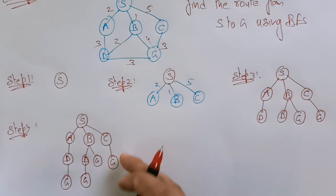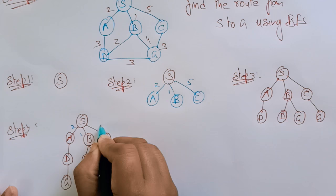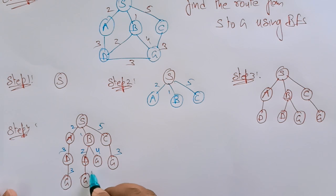The given graph I expanded and it is formed in the tree. The weights are 2, 1, 5. This is 3 and this is 2, 4, 3. This is 3 and this is 3.